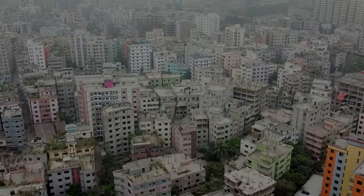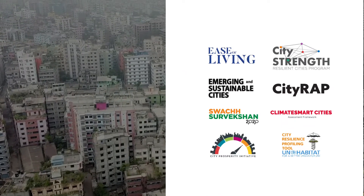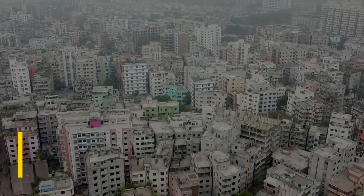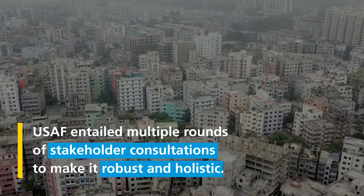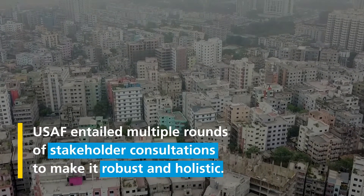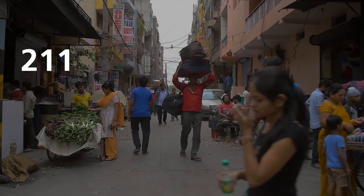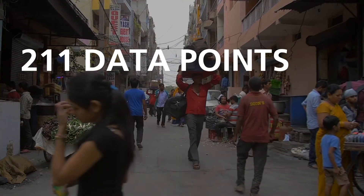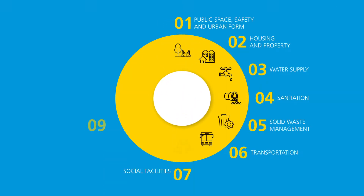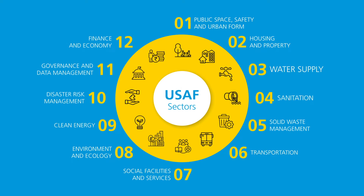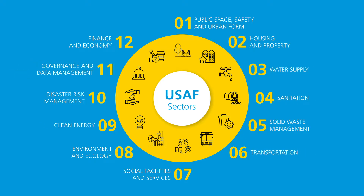Following a thorough review of multiple national and international development frameworks, the design of USAAF entailed multiple rounds of stakeholder consultations to make the tool as robust and holistic as possible. Taking into account 211 data points across 131 indicators, USAAF assesses a city's performance in 12 sectors such as water supply, sanitation, transportation, governance, and clean energy. These indicators are in line with the UN's Sustainable Development Goals and national and international frameworks.